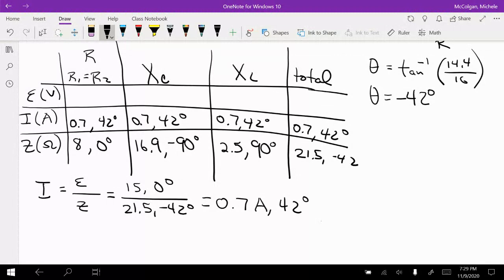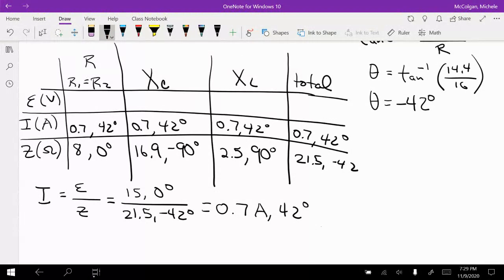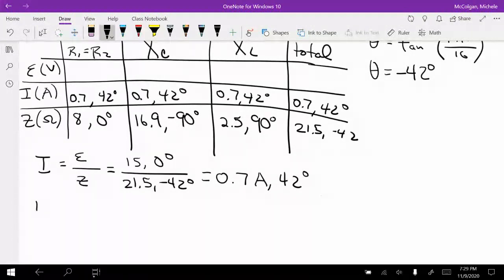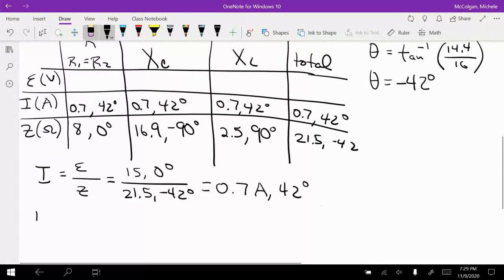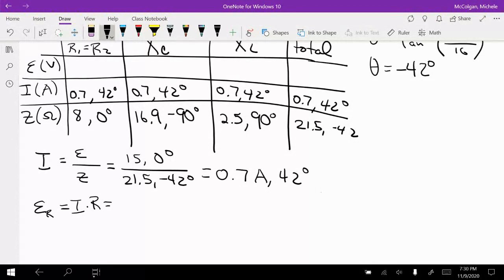Okay, so now to calculate each of these, I'm going to multiply. So the voltage E sub R is going to be I times R. So that's just 8 times 0.7. And 8 times 0.7 is 5.6 and I'm going to have 0 degrees. So 5.6 volts and 0 degrees.